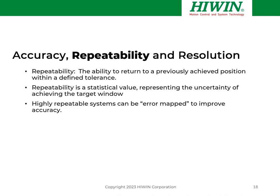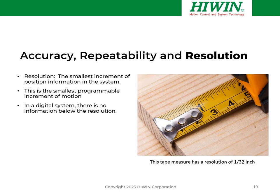Repeatability is the ability to return to a previously achieved position within a defined tolerance. It's a statistical value that represents the uncertainty of achieving a target window. Highly repeatable systems can be error-mapped to improve their accuracy through compensation or calibration. Resolution is the smallest increment of position information in the system — also the smallest programmable increment of motion in a servo system. But just because you can program it doesn't mean you'll achieve it. In a digital system, information is quantized — there's no information below the resolution. A common tape measure with 1/32-inch markings illustrates this: it has a certain resolution, but accuracy and resolution are not the same thing and one does not imply the other.